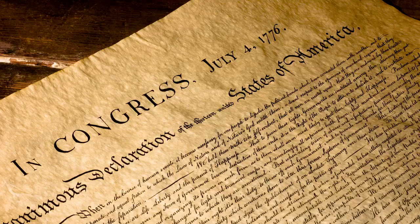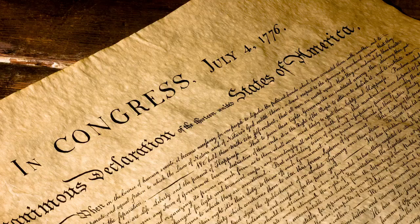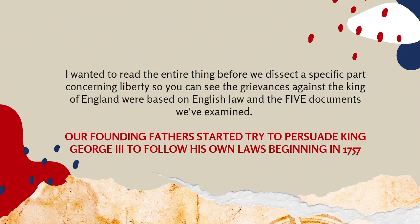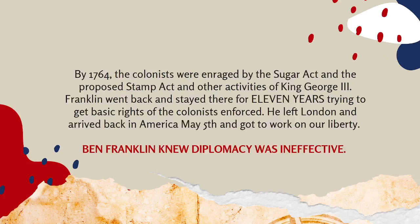Unalienable rights given by our Creator means these are natural rights that only God can give to His creatures. Our rights were not given to us by man; therefore, man cannot take them away. The only purpose of government is to secure our rights to life, liberty, and the pursuit of happiness. John Adams explained that the pursuit of happiness is the idea that we are to own land and property. The main thing: we've examined five documents that led to this sixth — the Declaration of Independence — after trying to persuade King George III to follow his own laws beginning in 1757.